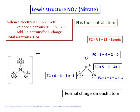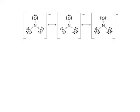Let us continue to the resonance structure of nitrate. You saw from the Lewis structure there was a double bond between one nitrogen and one oxygen.